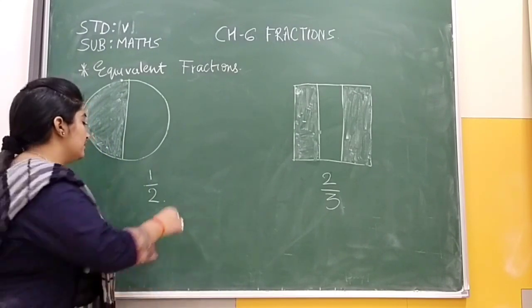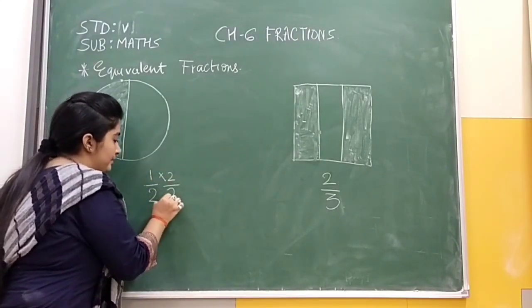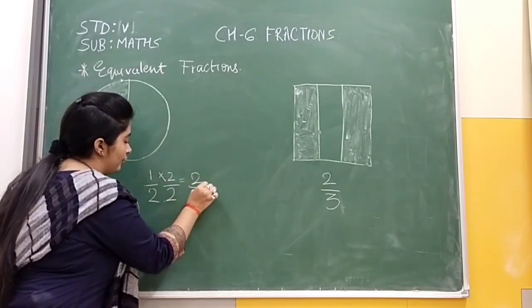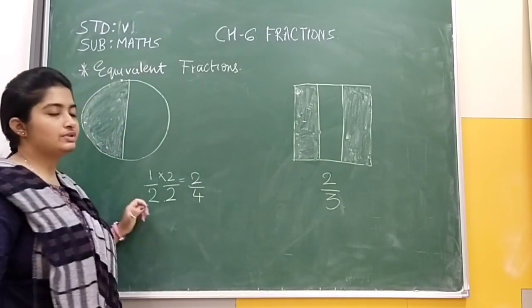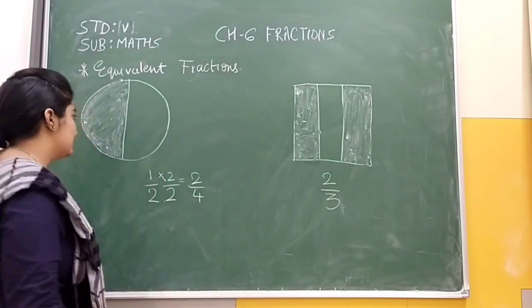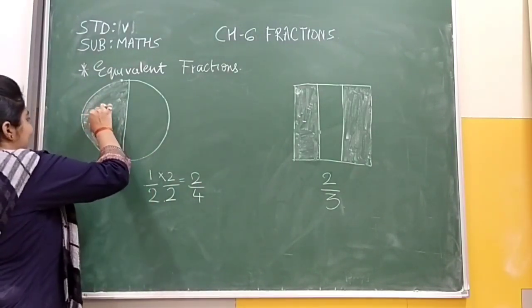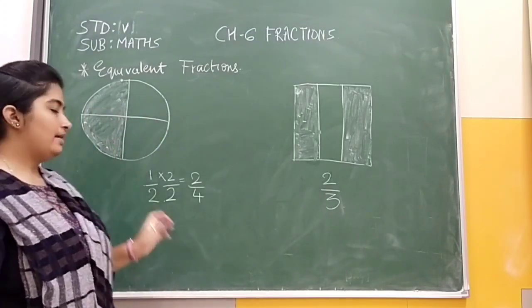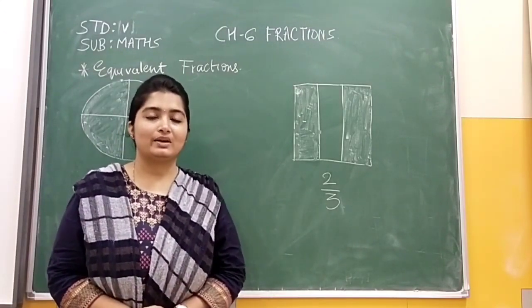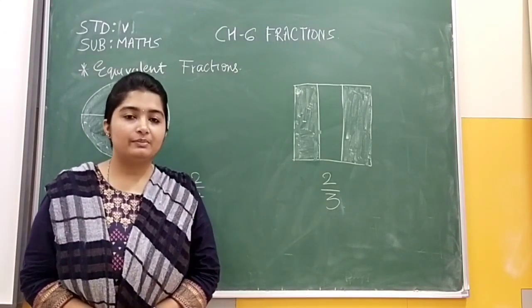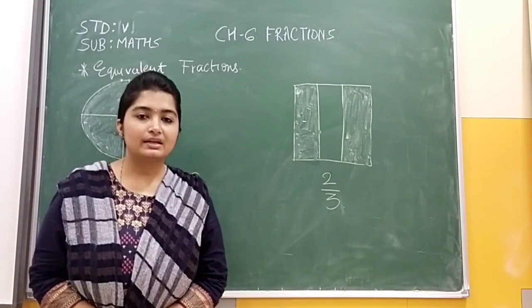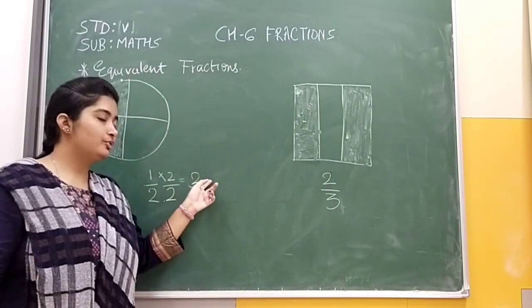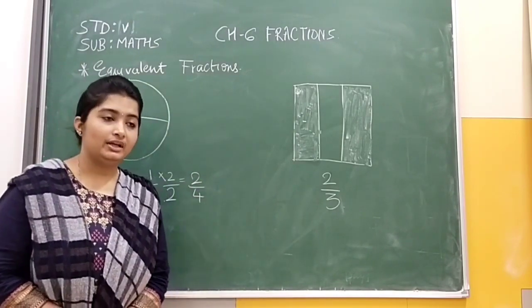For example, here I am multiplying both top and bottom by 2. So we will get 2 upon 4. Now I need to represent this in the circle. Just draw a line between the parts. We can see that we now have four equal parts, and two parts are covered. Out of four parts, there are two parts covered.